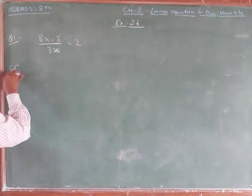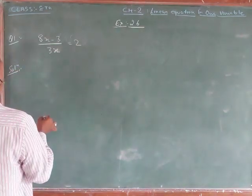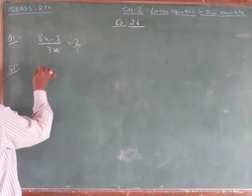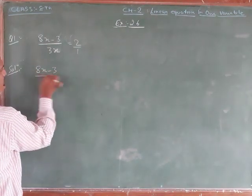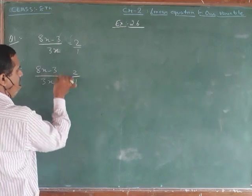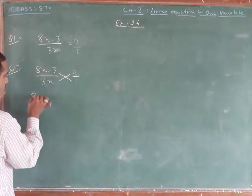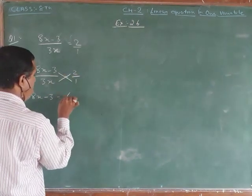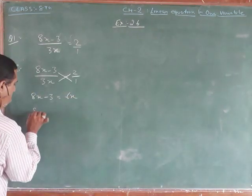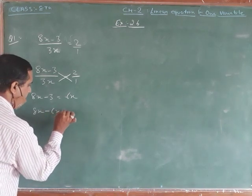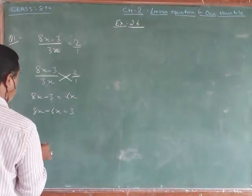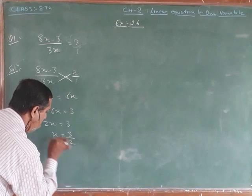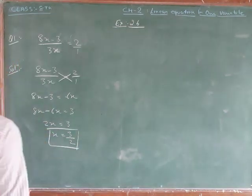Using cross multiplication, 8x minus 3 equals 6x. So 8x minus 6x equals 3, which gives us 2x equals 3. Therefore x equals 3 over 2. This is the solution.